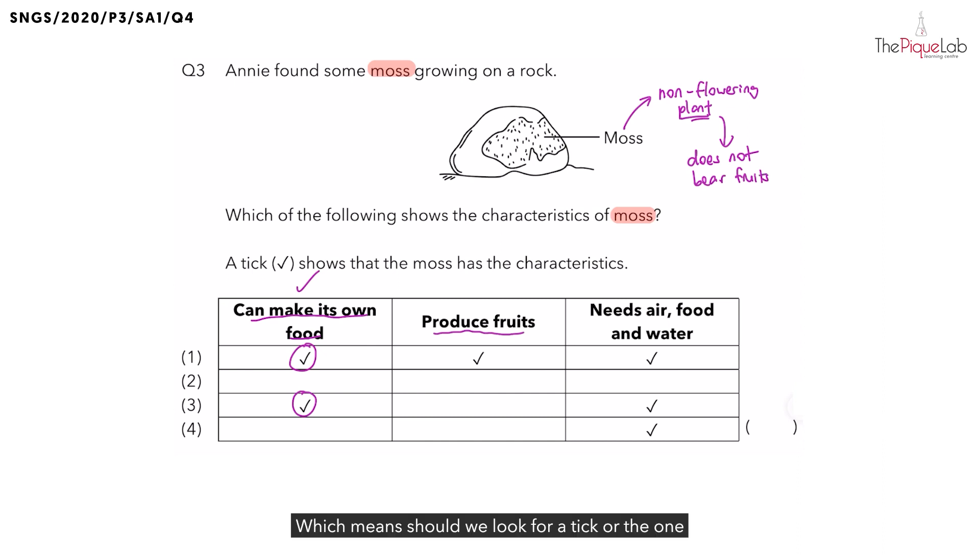Which means, shall we look for the tick or the one that doesn't have a tick? We shall look for the one that does not have a tick for this characteristic. Which means, which options are possible? It is going to be 2, 3, and 4.